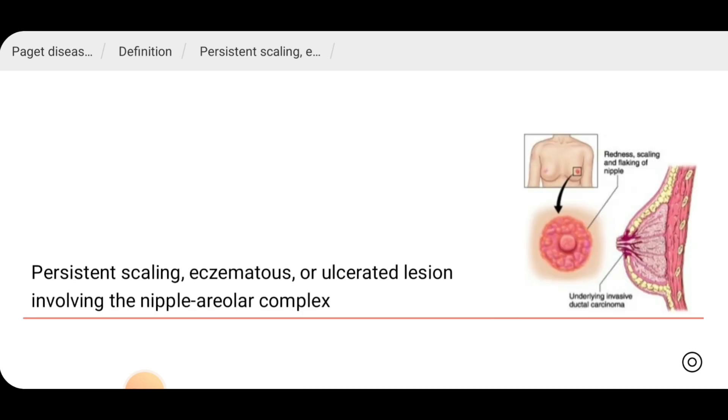As you can see in this picture, the area around the nipple areolar complex is reddish, scaling is there and flaking of the nipple is there. This usually occurs with underlying breast carcinoma.